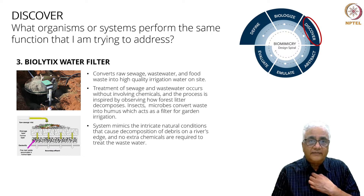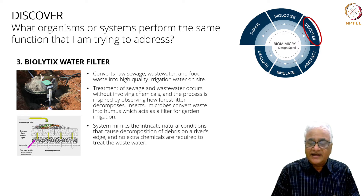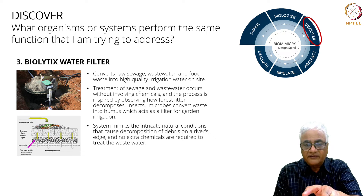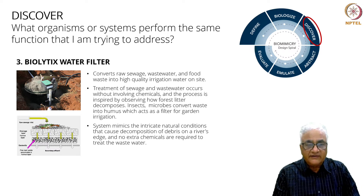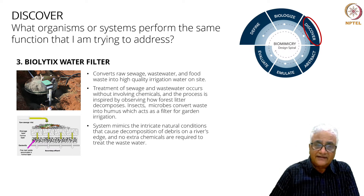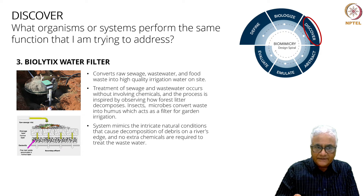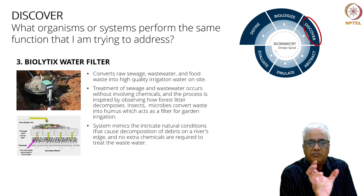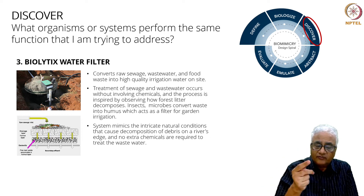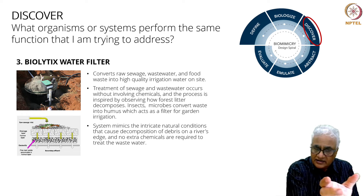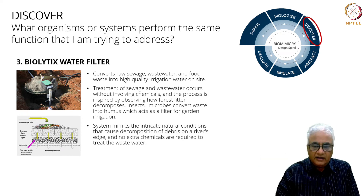She's actually talked about something called a biolitic water filter. If you look at the second paragraph, she's talking about treatment of sewage — how forest litter decomposes, insects and microbes convert waste into humus, which acts as a filter. She's talking about several organisms that filter waste and describes what is called a biolitic water filter. What I learned from Sahana is that by reading about the water filter, I understand what nature does. So this is her discover step.